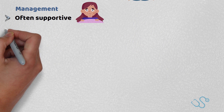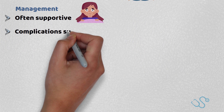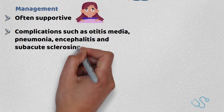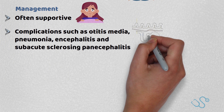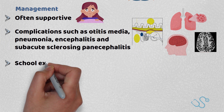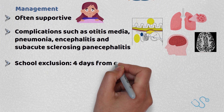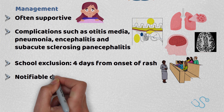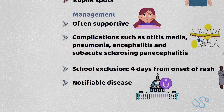Management is often conservative, but complications such as otitis media, pneumonia, encephalitis and subacute sclerosing panencephalitis are relatively rare. The MMR vaccine should be offered to children exposed to measles if they've not been vaccinated already. School exclusion is four days from the onset of the rash. It is also a notifiable disease.